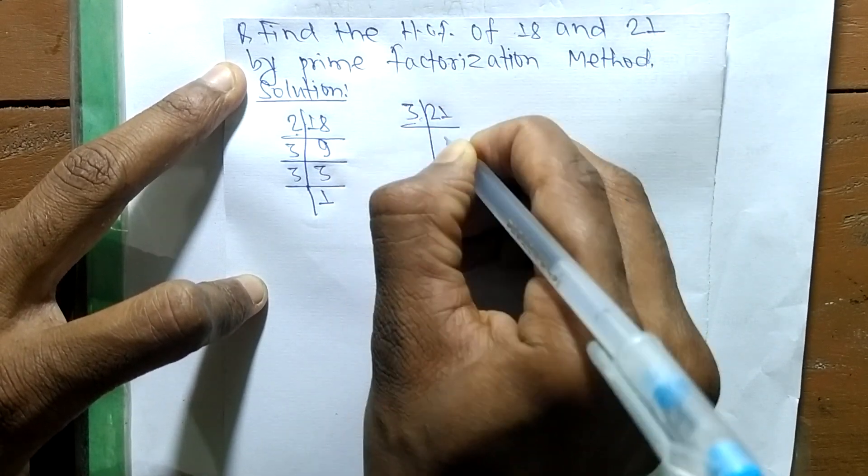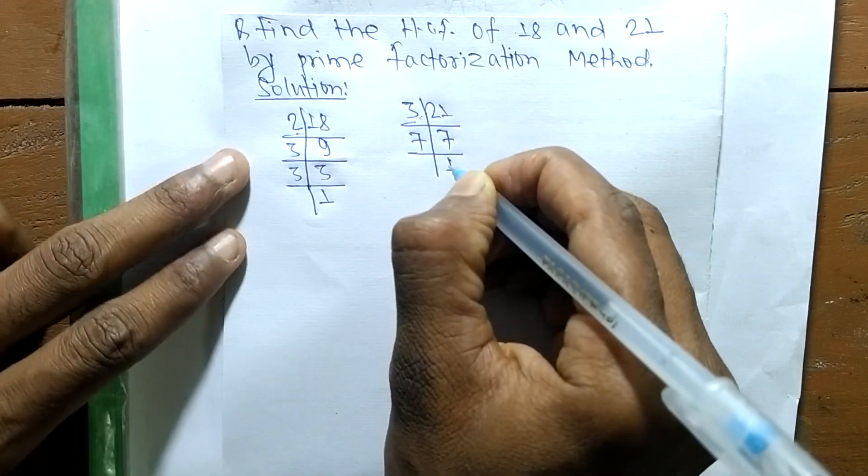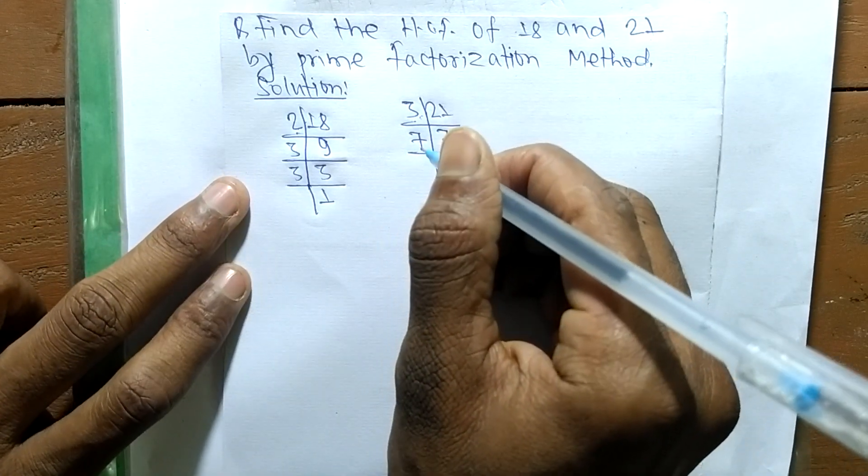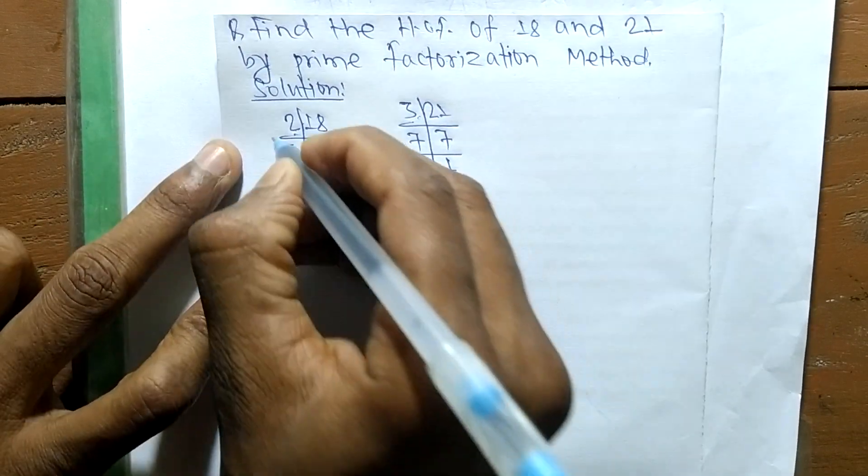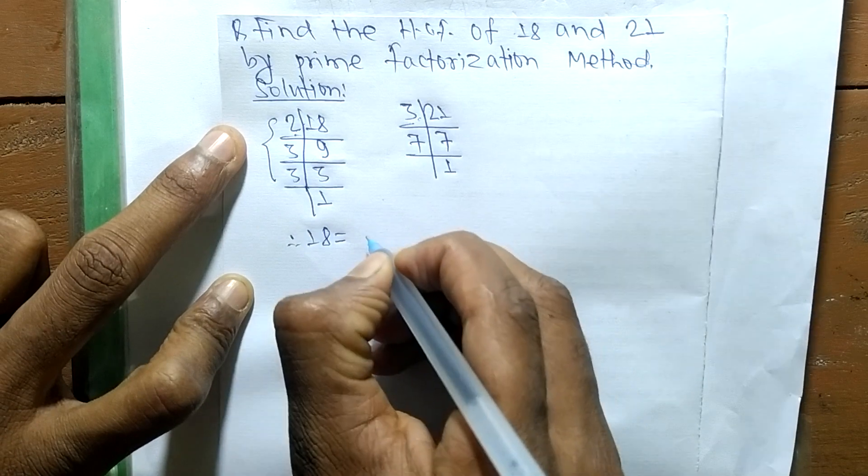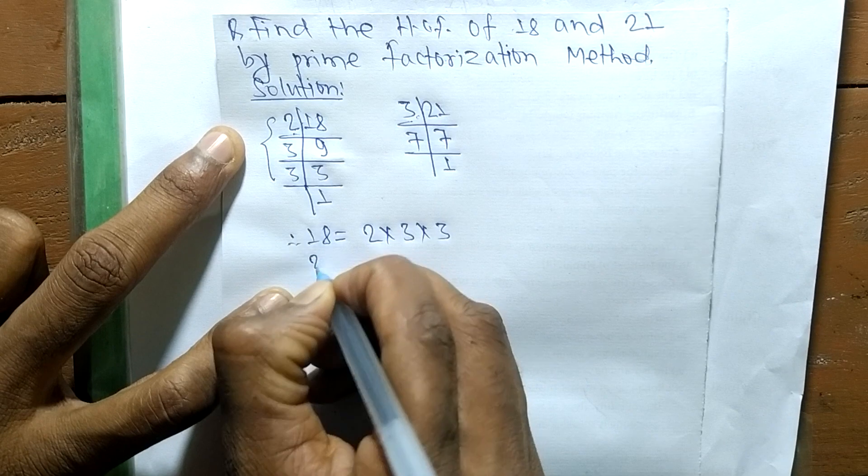It is 3 times 7 means 21, and 7 times 1 means 7. So now from these prime factors, we can write 18 is equal to 2 times 3 times 3.